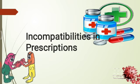Before studying drug incompatibility, we discuss two simple points. First, the drug. A drug is a medicine — it is nothing but the API, the active pharmaceutical ingredient. For example, paracetamol is an API that produces a therapeutic response as an antipyretic.